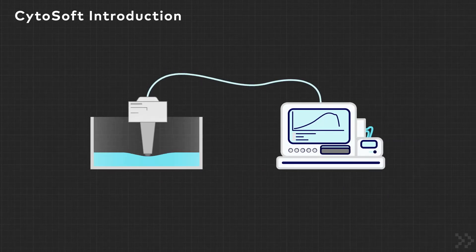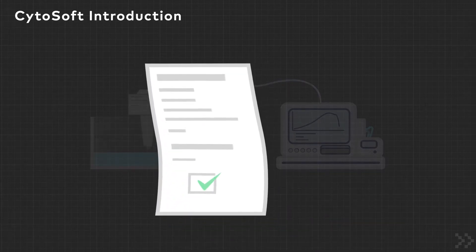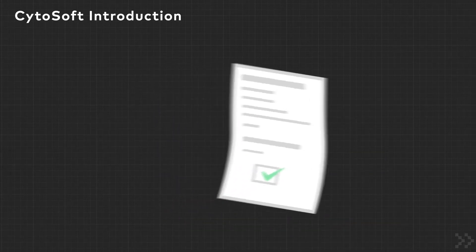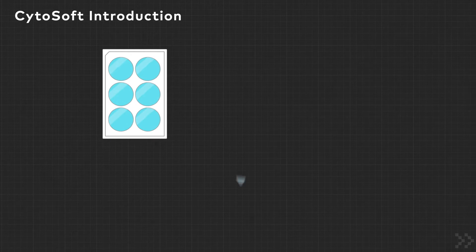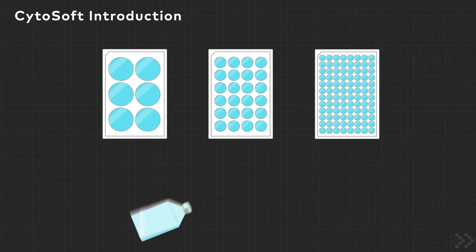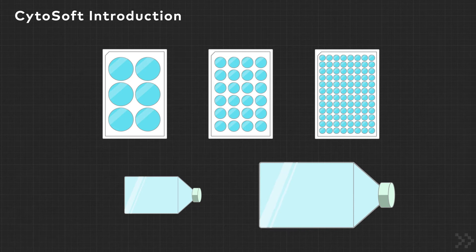The stiffness of each batch is carefully measured and shared on the certificate of analysis. The plates are available as 6, 24, and 96 well plates, or as T25 and T75 flasks.